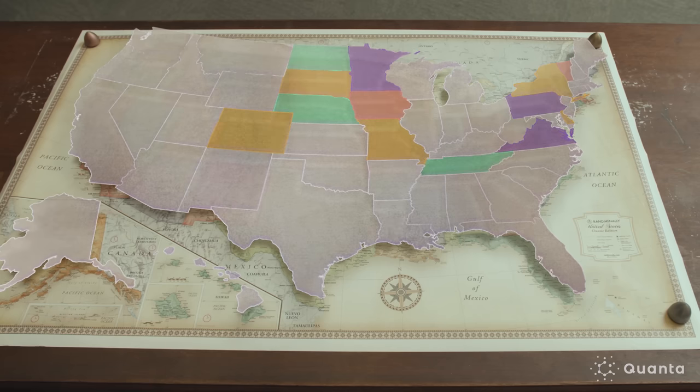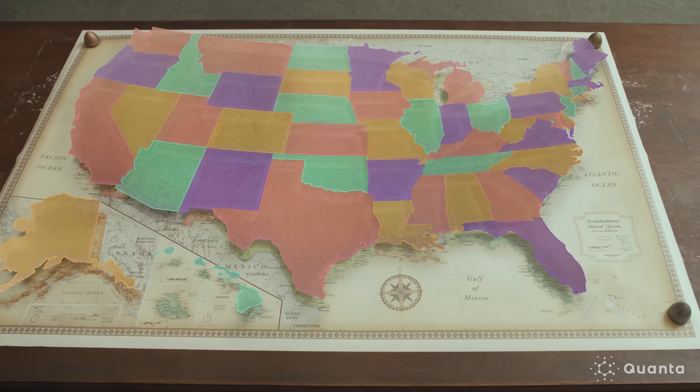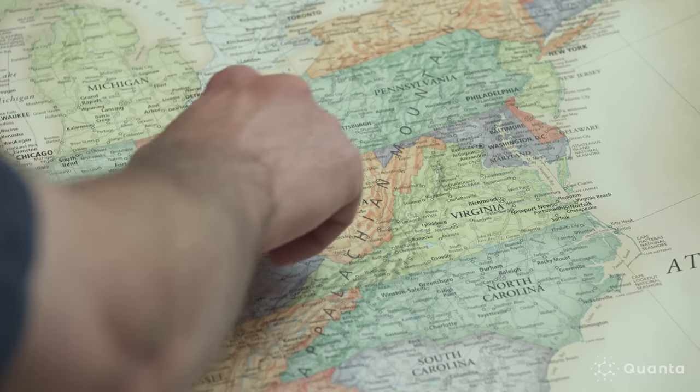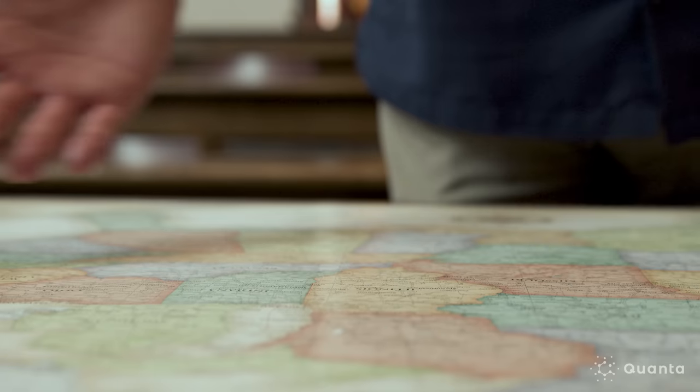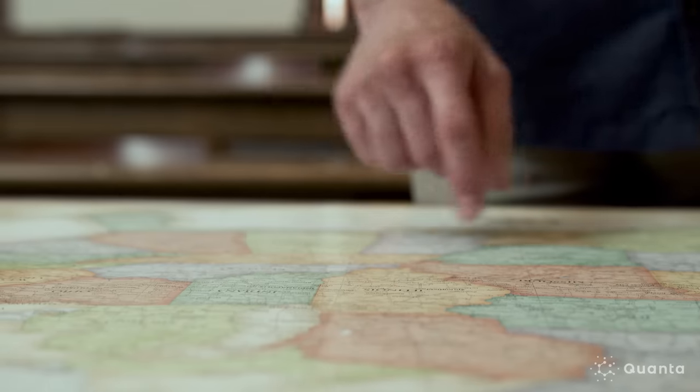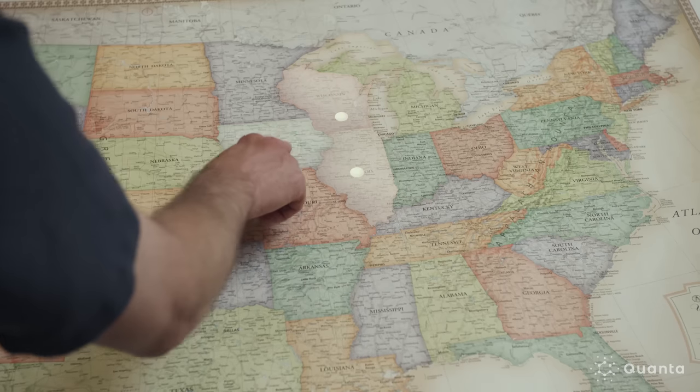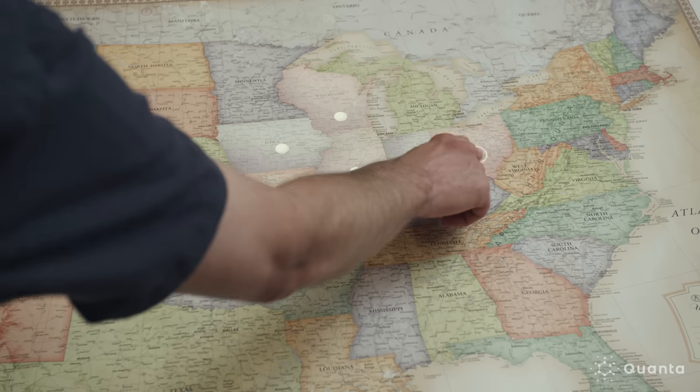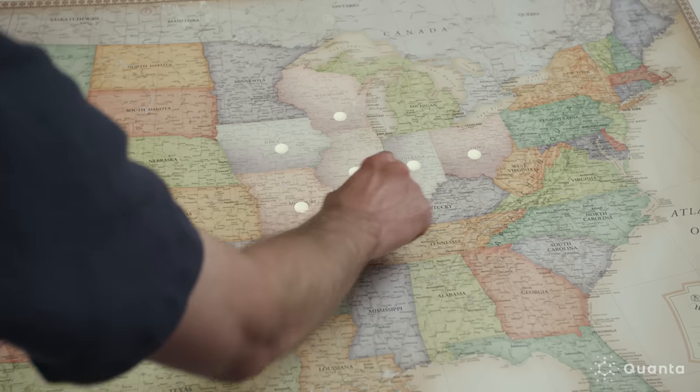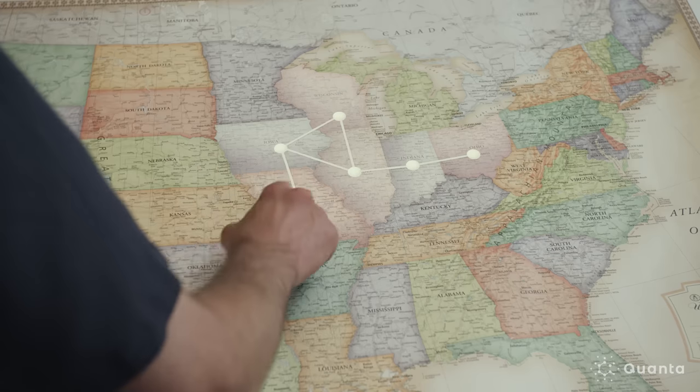To understand how Kemp and other mathematicians looked at this problem, it helps to strip away all unnecessary information. We can replace each state by a vertex, a single point. And if two regions neighbor each other, we can draw a line segment between those two vertices. That's called an edge. And so we turn this from a map coloring problem into a graph coloring problem.